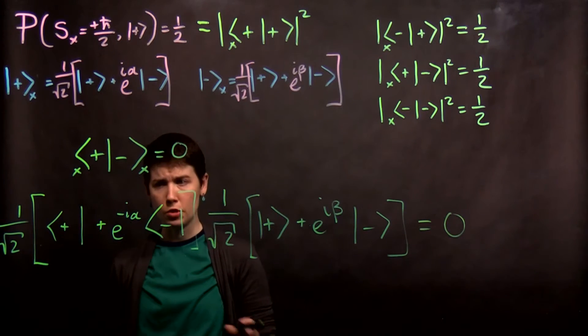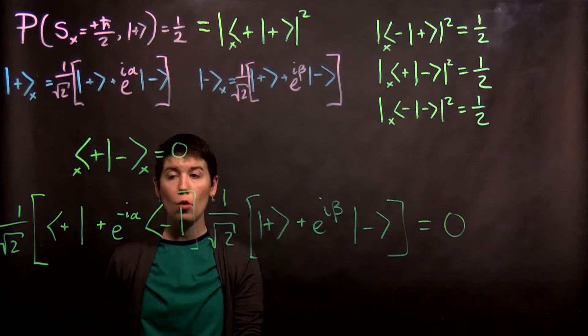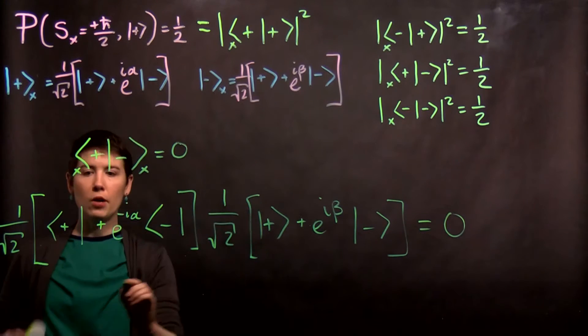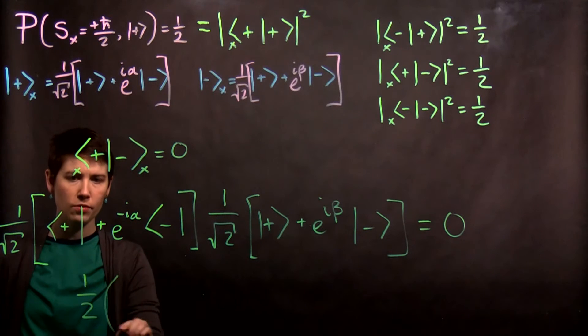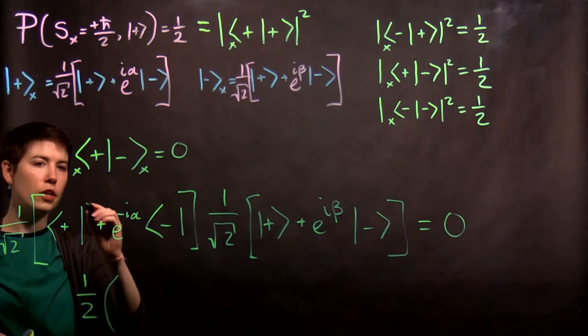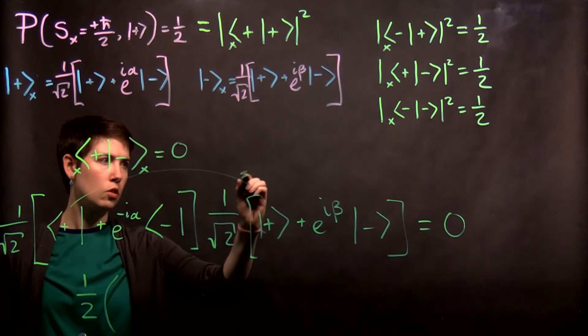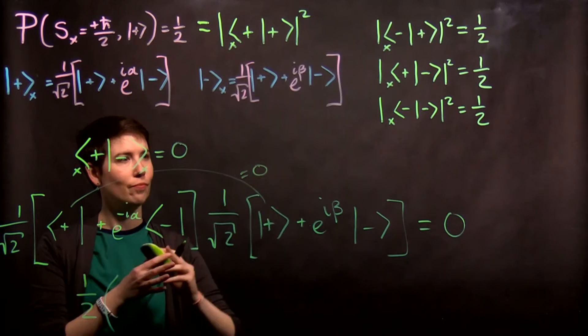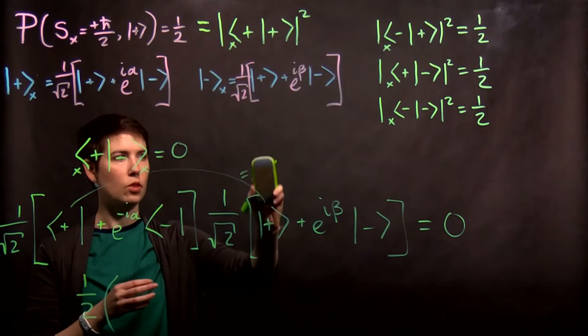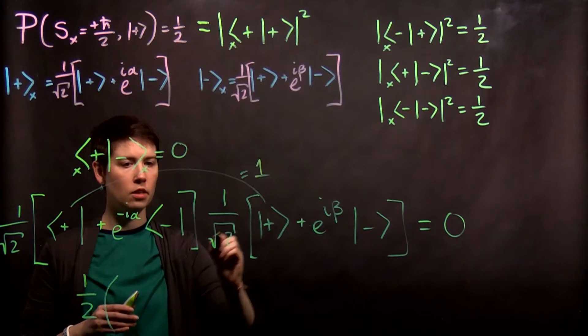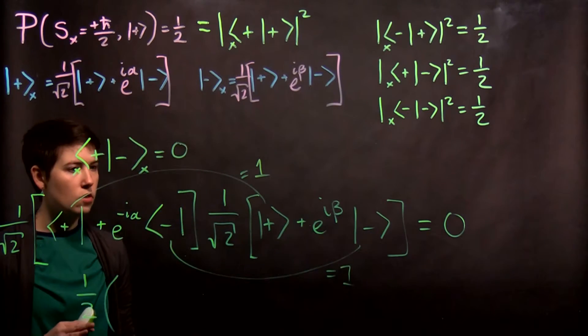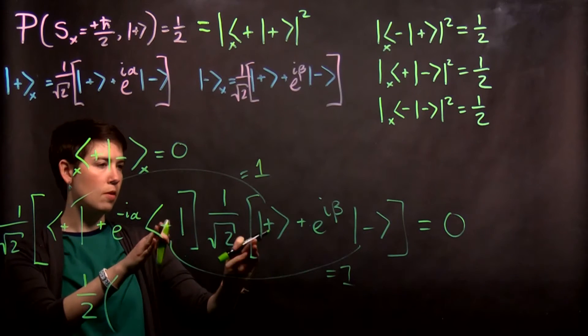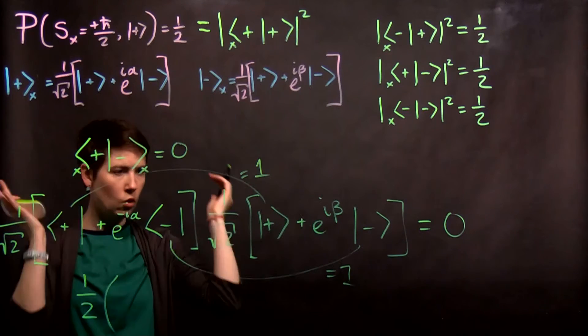So as we often do, we are going to foil this out. We have four terms. And now, don't forget about these. So I'm going to go ahead and multiply them together and bring them out to the left, giving me a 1 half. And now I know of these four terms, this one will equal 1, because it's the plus with the plus. 1 minus with minus is also 1. And these cross terms of minus with plus, plus with minus, would be 0.